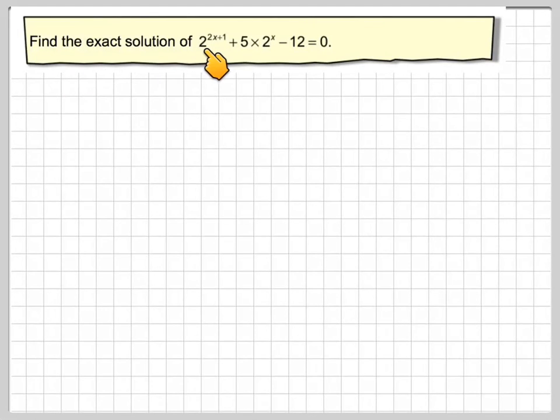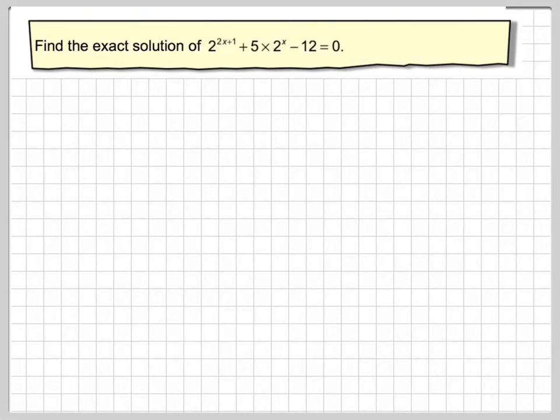Find the exact solution of 2 to the 2x plus 1 plus 5 times 2 to the x minus 12 is equal to 0. So we've got 2 to the 2x plus 1 plus 5 times 2 to the x minus 12 is equal to 0.